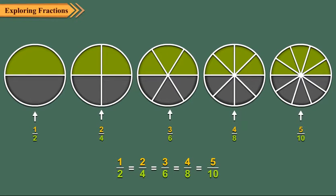Of course, yes. We see that the shaded portions of these circles are the same. It means the fractions represented by these shaded portions are equal. Thus, one upon two is equal to two upon four, equal to three upon six, equal to four upon eight, equal to five upon ten. And we call one upon two, two upon four, three upon six, four upon eight and five upon ten as equivalent fractions.